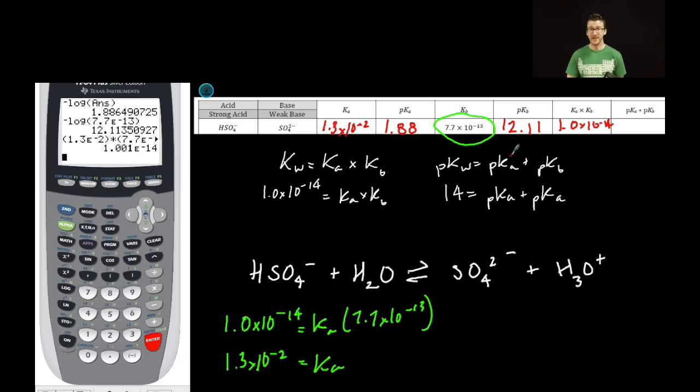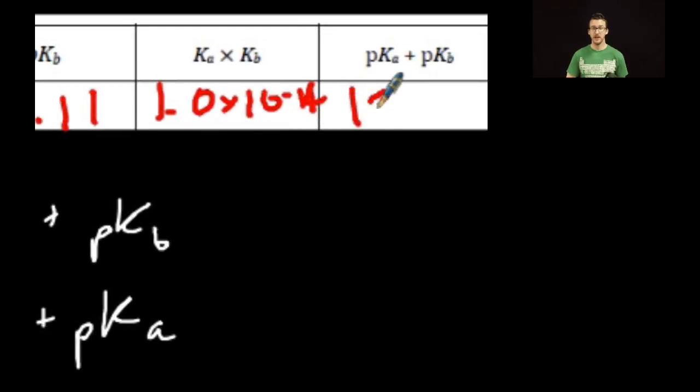Let's multiply Ka and Kb together first. I get 1.3, second E, negative 2, times 7.7, second E, negative 13, close parentheses. I get 1.0 times 10 to the negative 14. Now, let's add our pKa and our pKb. 1.88 plus 12.11, answer. We get 13.99.